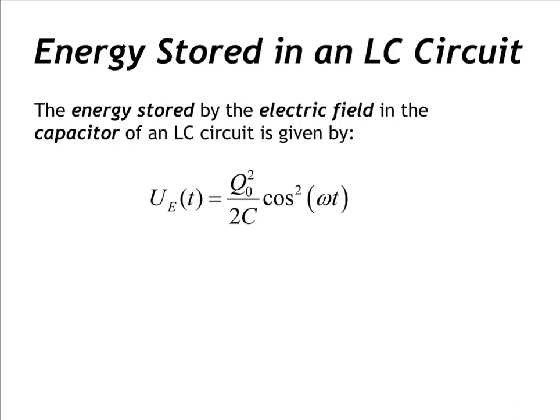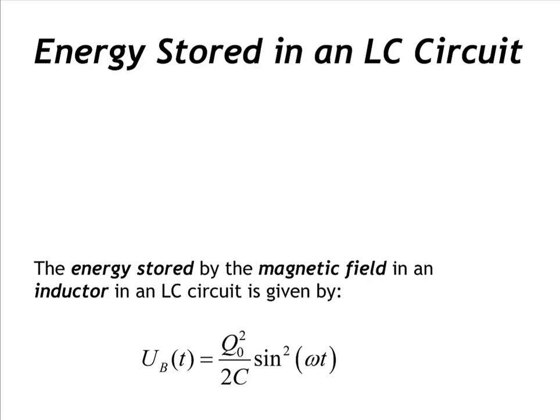So potential energy varies periodically. Since the current in the circuit varies periodically, the potential energy stored by the magnetic field of the inductor must also vary periodically. Since the current is a periodic function of time given by sine, the potential energy stored by the magnetic field in the inductor is given by the amplitude of charge squared divided by two times the capacitance, times the square of the sine of the product of the angular frequency and time.